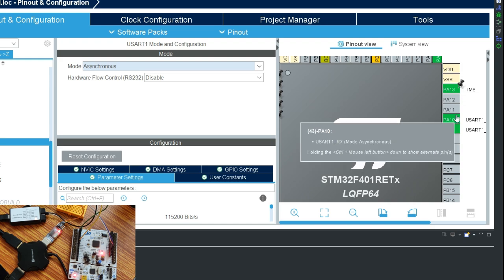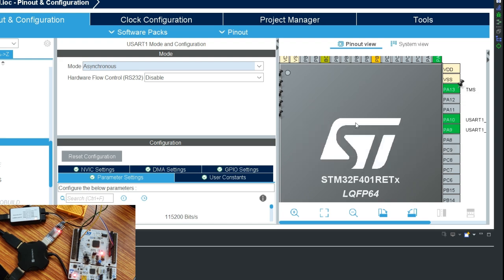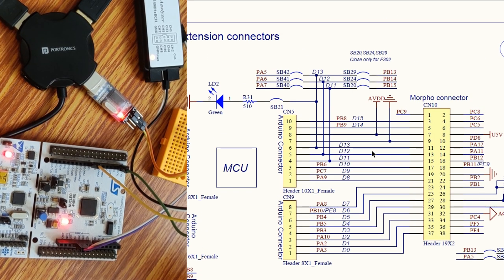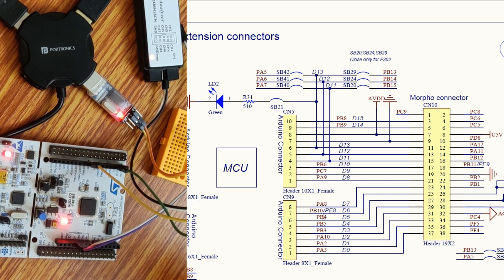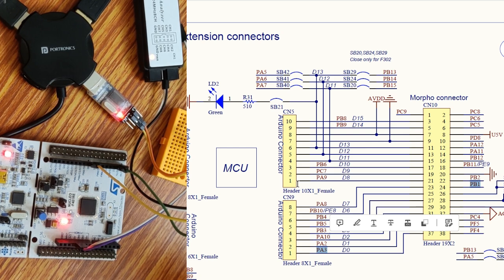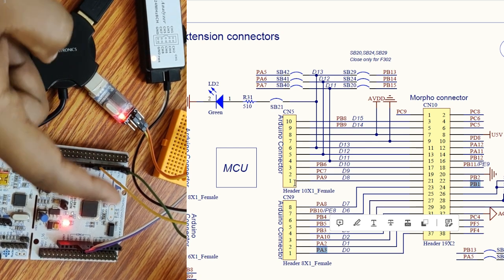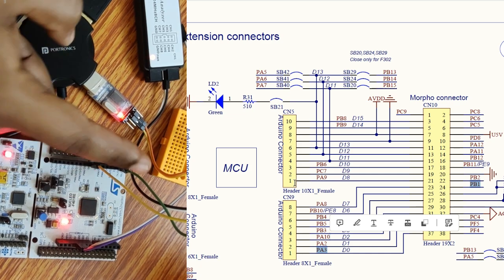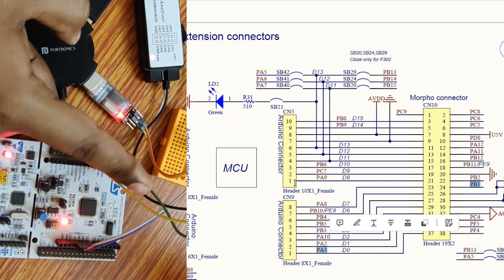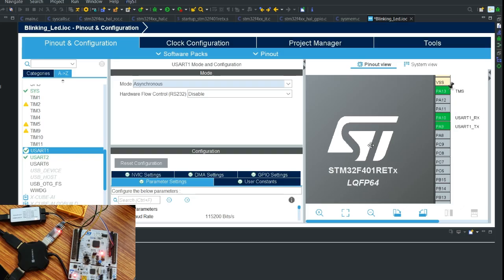Let's enable UART2 in asynchronous mode and UART1 also in asynchronous mode. Here you can see PA10 and PA9. In the schematic, PA10 is the third pin on the connector and PA9 is the first pin. I have connected the yellow wire to PA9 and the green wire to PA10. Now let's save it.